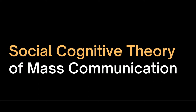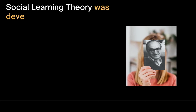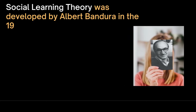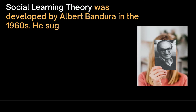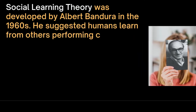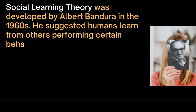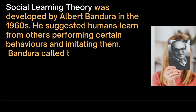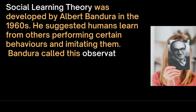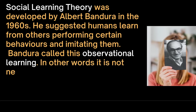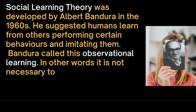Social learning theory was developed by Albert Bandura in the 1960s. He suggested humans learn from others performing certain behaviors and imitating them. Bandura called this observational learning. In other words, it is not necessary to have a direct experience of something in order to learn.